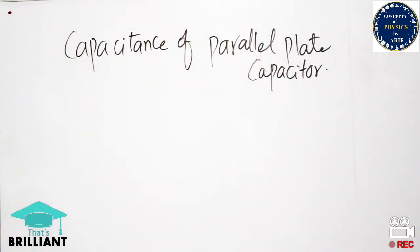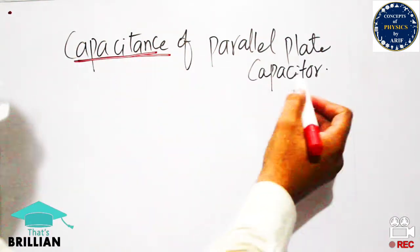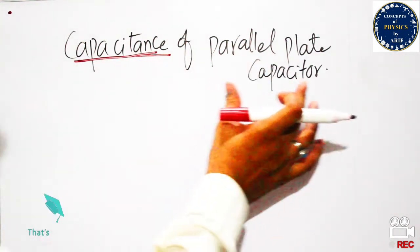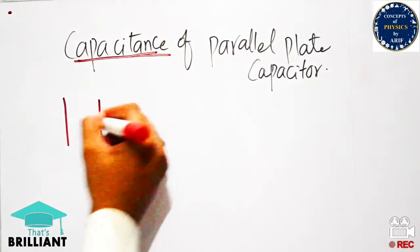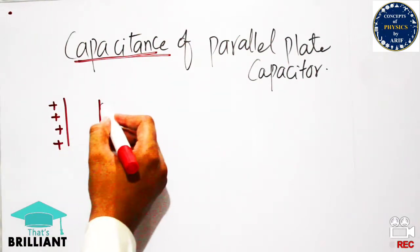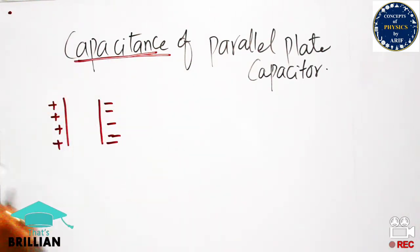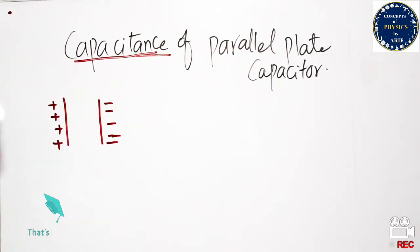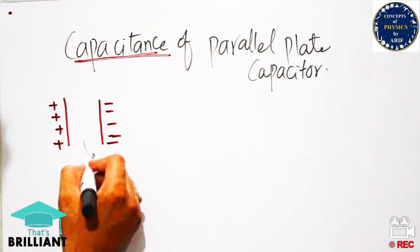Welcome to my YouTube channel. In this video I will briefly discuss the capacitance of a parallel plate capacitor. A parallel plate capacitor consists of two parallel plates, one containing a positive charge and the other a negative charge. The distance between these two plates is denoted as d, and the separation medium is vacuum or air.